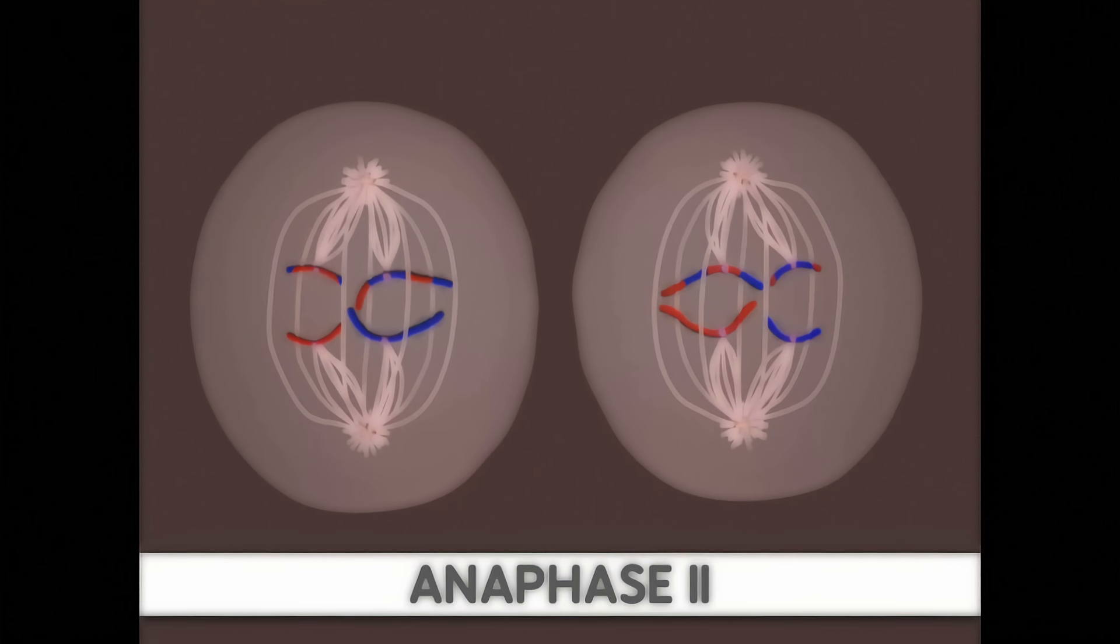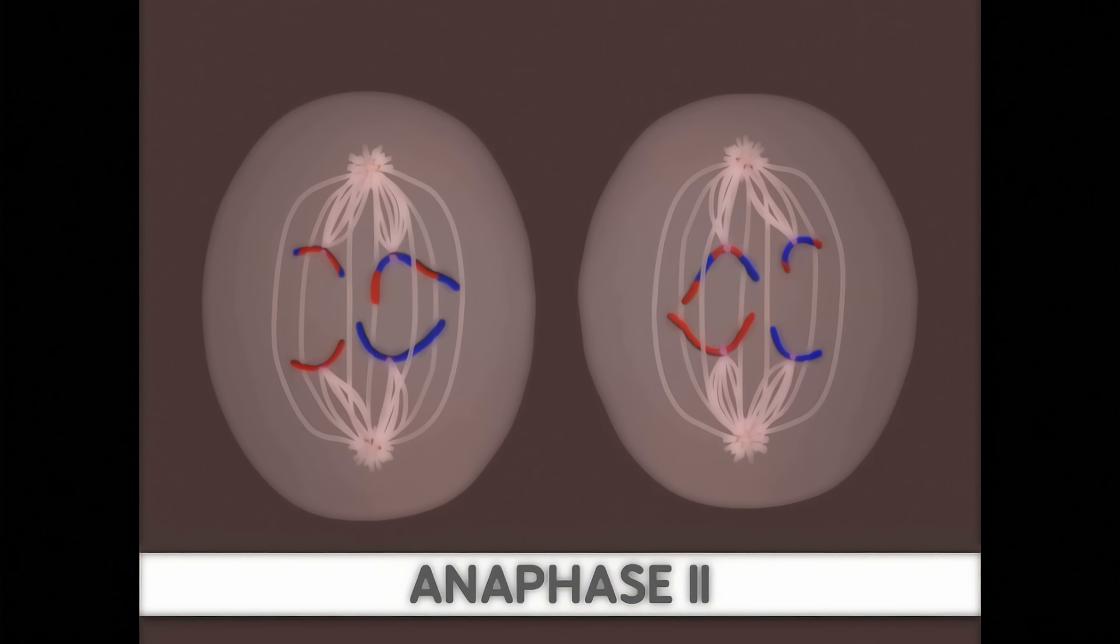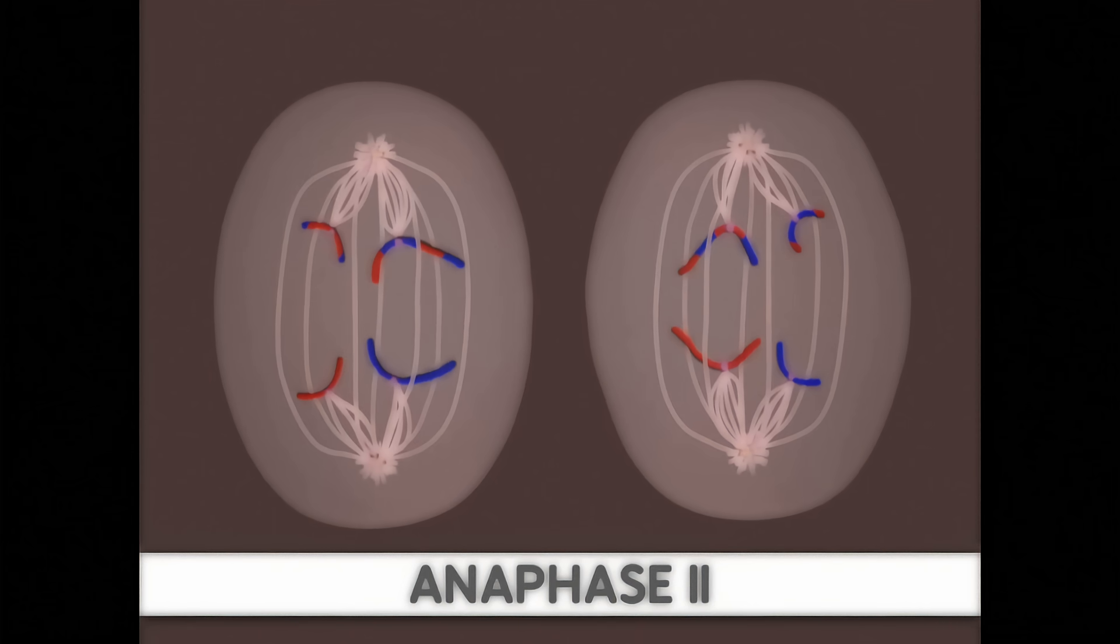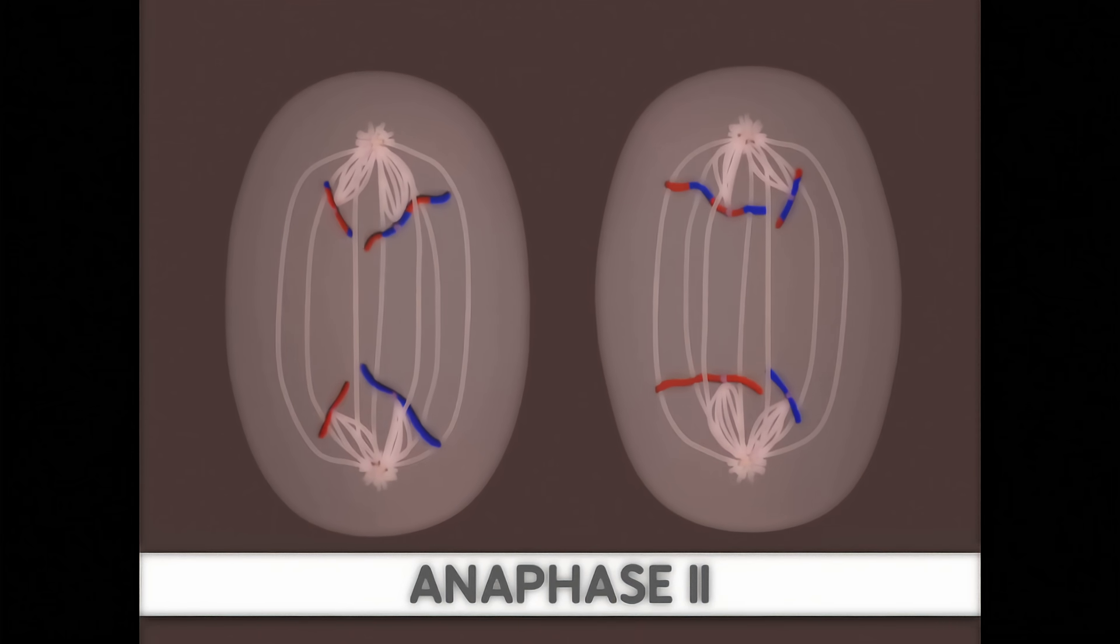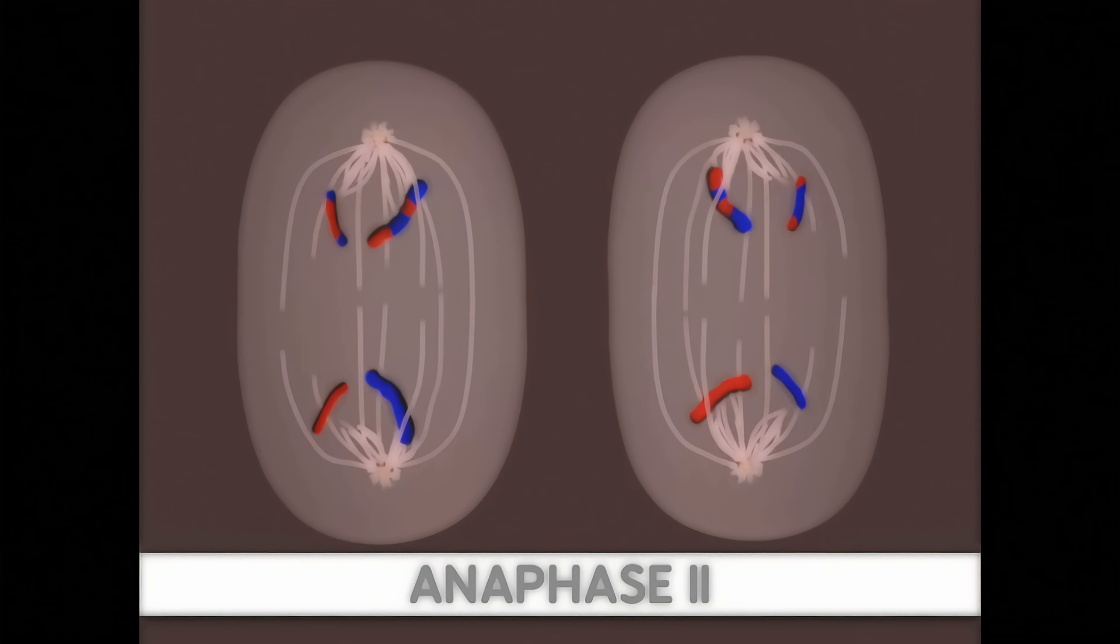In anaphase II, the sister chromatids are pulled apart as the microtubules shorten. Also, the ends of the cell are pushed farther apart as microtubules elongate.